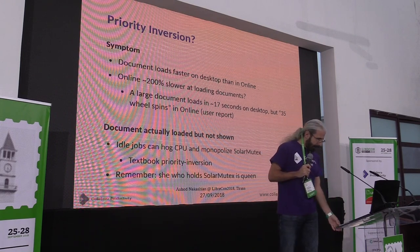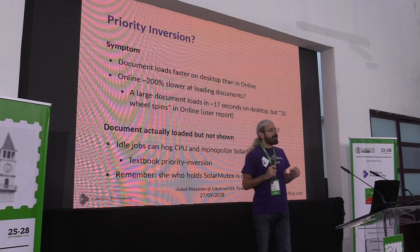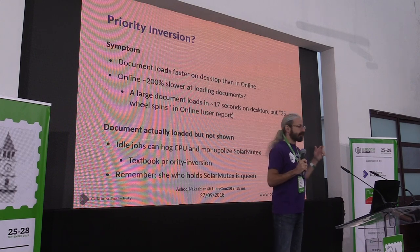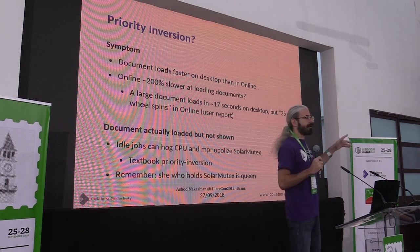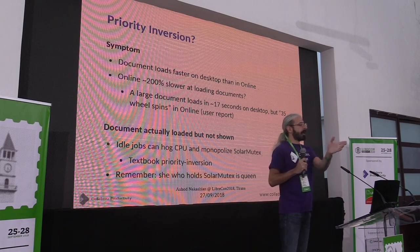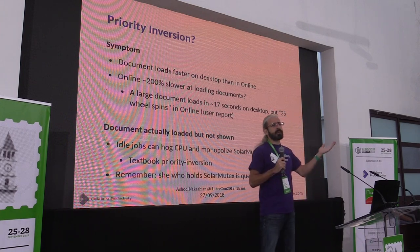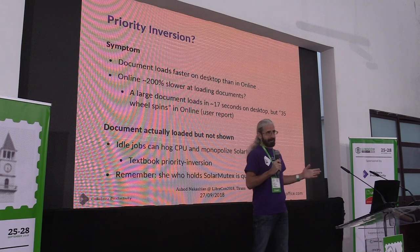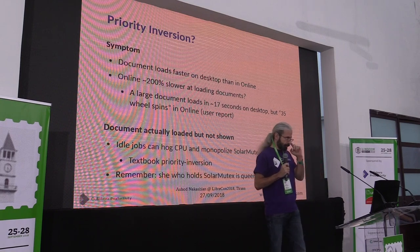This is a more interesting case I'm going to spend a couple of minutes on, where we found a very significant difference between desktop and online. In fact, it was almost twice as slow in online to load the very same document. We had two documents: one was about 6 seconds versus 3 — that's online versus desktop — and the other was 17 versus 35 seconds. So what was going on there? This was bizarre. What are we doing twice as much in online? Obviously nothing, yet the symptom was highly reproducible.